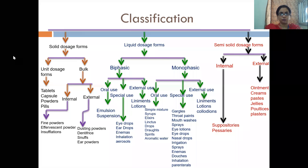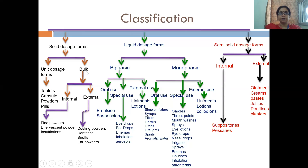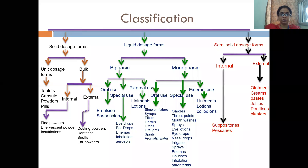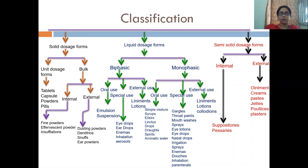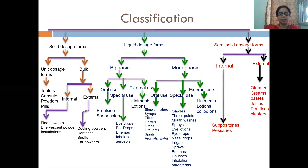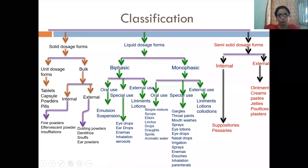We take the first — solid dosage form. We have divided it into two: first is unit, and second is bulk. Unit means single — like you have taken a tablet, that is a unit dosage form. Unit dosage forms include tablets, capsules, powders, and pills. Powders can be made in a sachet — these are called single-dose powders. Tablet, capsules, powders — these we will define one by one.